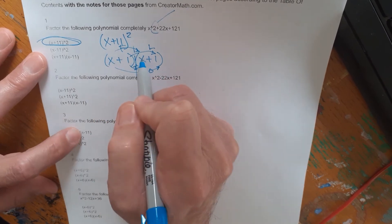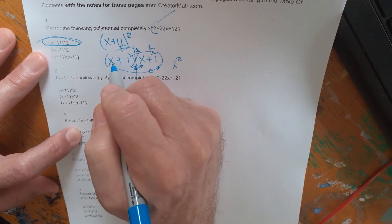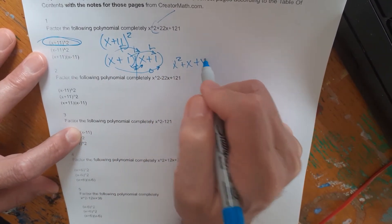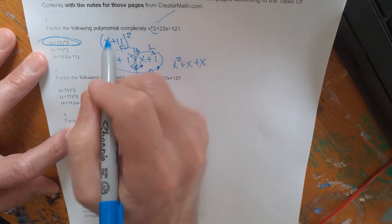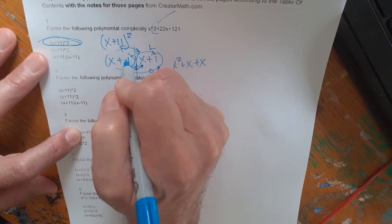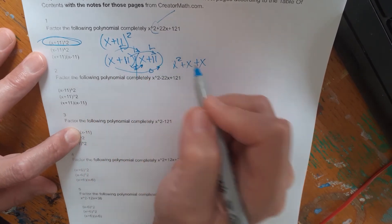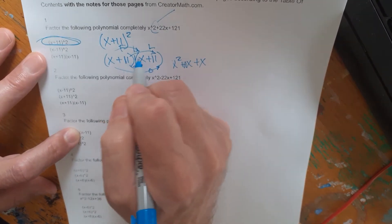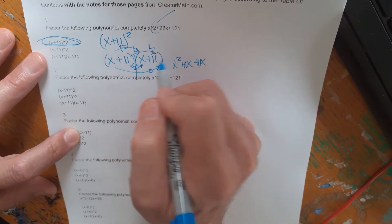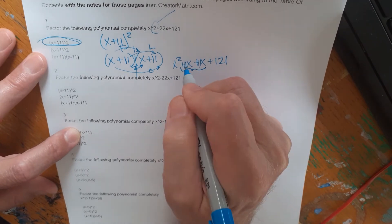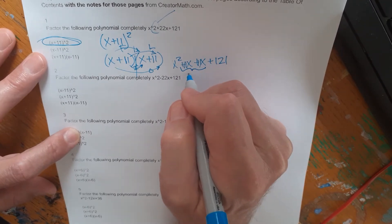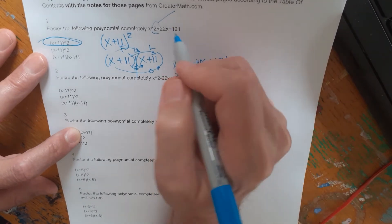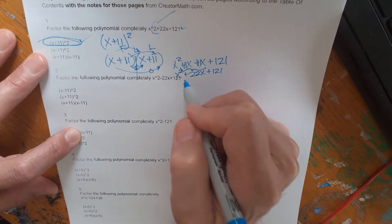So x times x is the first terms - x times x is x squared. The outside term is 11 times x or 11x. The inside term is 11 times x or 11x. And last is 11 times 11 or 121. We combine like terms right here. 11x and 11x is 22x. So this becomes x squared plus 22x plus 121. This is the right multiplication.